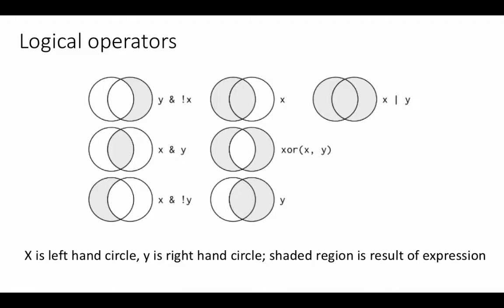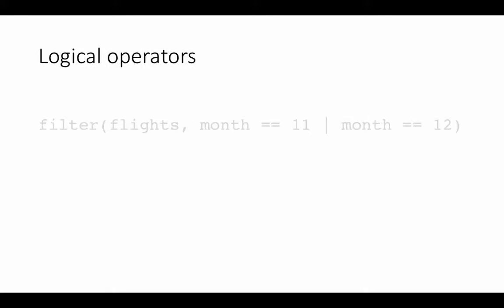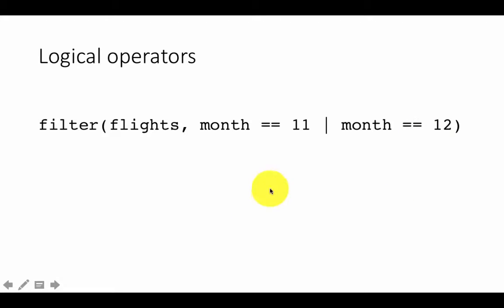Let us now look at some of these logical operators. Here we are saying filter flights where month is 11 or month is 12. In this case, we are saying give me all the flights that either took off in November or December. We are using the OR operator — the vertical bar.